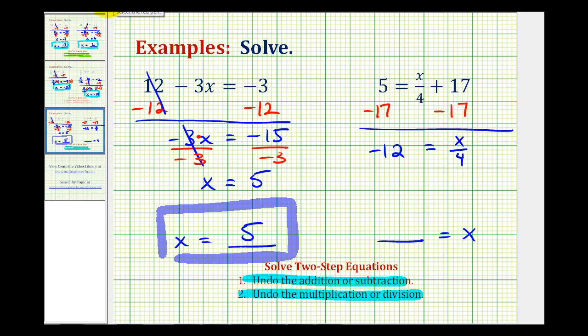And the opposite of dividing by four is to multiply by four. So multiply the right side by four and then multiply the left side by four. So looking at the right side, multiplying by four and dividing by four undo each other. This would simplify to one x or just x.